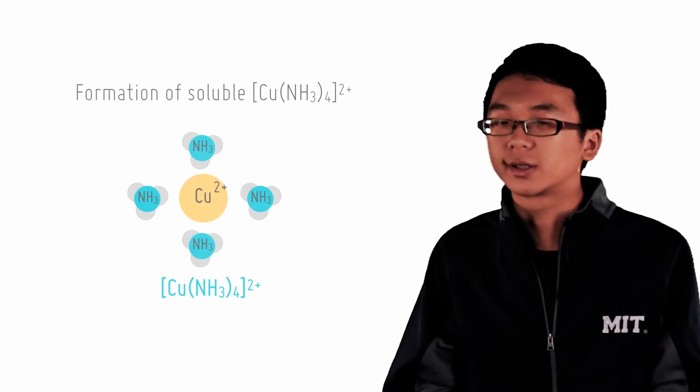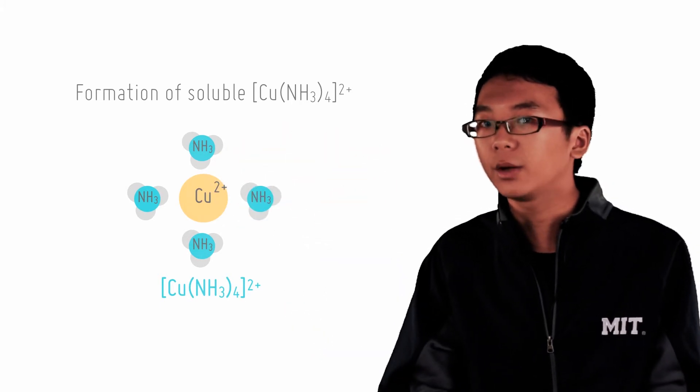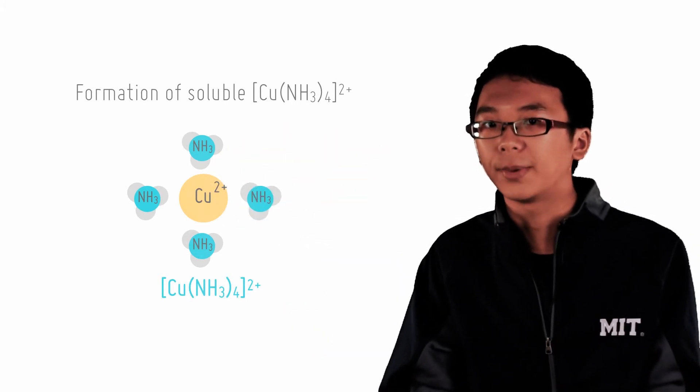The equilibrium position of the original dissolution reaction also shifts to the right, as copper and ammonia are being removed from the solution to form complexes.